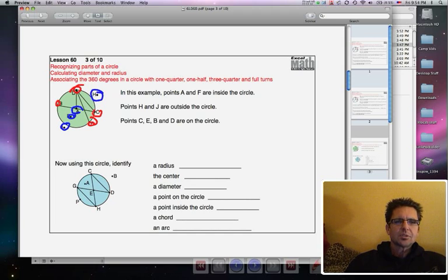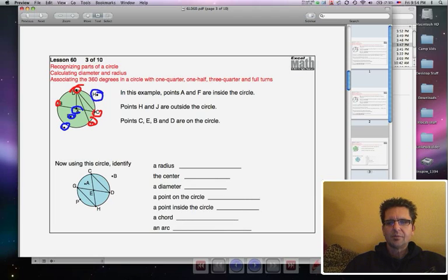Now what you're going to do is use this next drawing to identify a radius, the center, a diameter, and so on. Notice when it says a radius, you do not need to identify all of the radii, just pick one and write it. But you do need to put the little line over the top of the letters when you identify these different things. And if you're going to identify an arc, you put a curve over the top instead of a straight line segment. Go ahead and try these and turn the video off, then turn it back on when you're ready to see the answers.